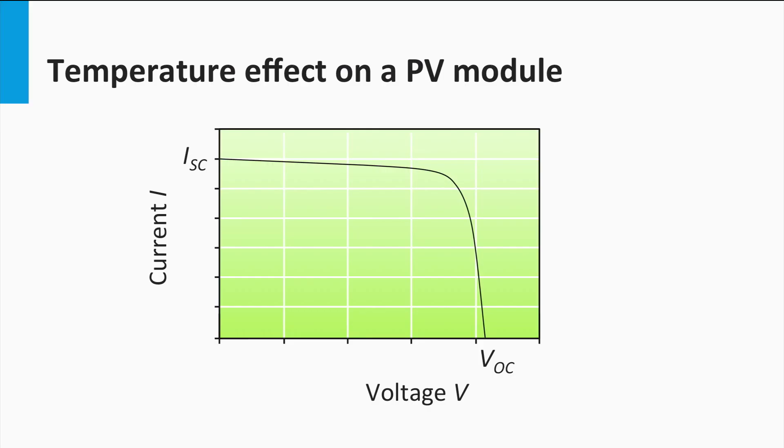In this graph you see the I-V curve of a PV module at a given irradiance and temperature. Now if the temperature increases while the irradiance is constant, we see an I-V curve that looks like this. So we see that while the current has very minorly increased, there is a significant drop in voltage. This means that the overall power output has decreased.